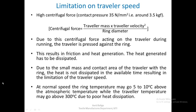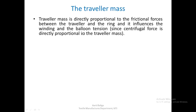Traveler speed cannot be increased beyond a certain limit because of the large amount of heat generated due to friction. At normal speeds, ring temperatures may go around 5 to 10 degrees above atmospheric temperature. But the traveler temperature may go well above 300 degrees Celsius due to poor heat dissipation.